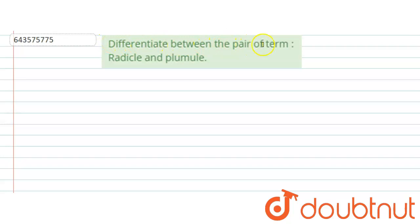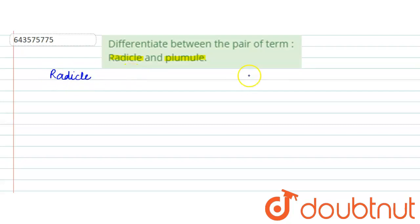Hello everyone. Here the question says: differentiate between the pair of terms — radicle and plumule. So in this question we will be differentiating between radicle and plumule. Let's write radicle on the left side and plumule on the right side.